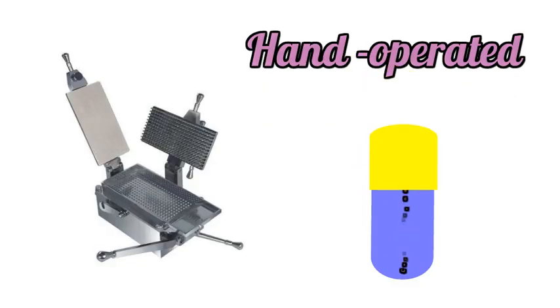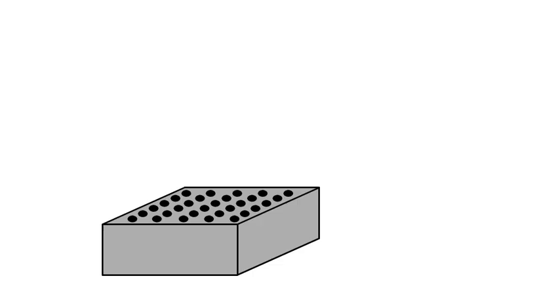First, let's understand different parts of a Hand-Operated Capsule Filling Machine. This is a bed with holes. It has holes ranging from 100 to 300 and actual filling and sealing of capsules take place in this part of the machine.